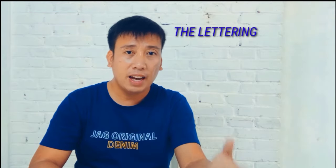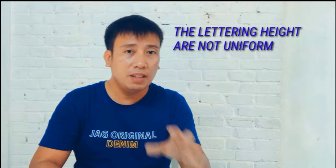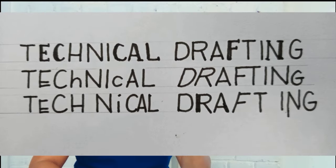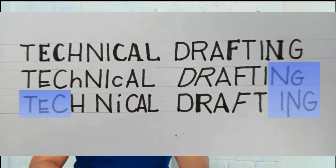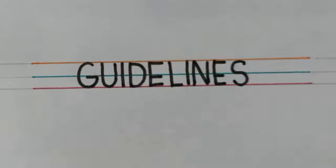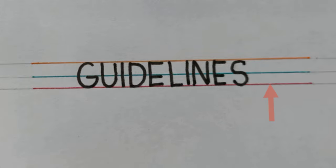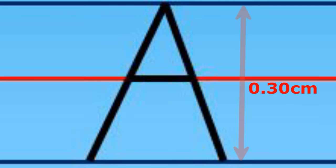Another common mistake is when the lettering height is not uniform. This typically happens when the drafter is not using guidelines. Guidelines are drawn almost invisible or extremely light to keep the lettering height uniform. Remember this: lettering is easier when you use guidelines. For guidelines, we have the cap line on top, the waistline in the middle, and the baseline at the bottom.